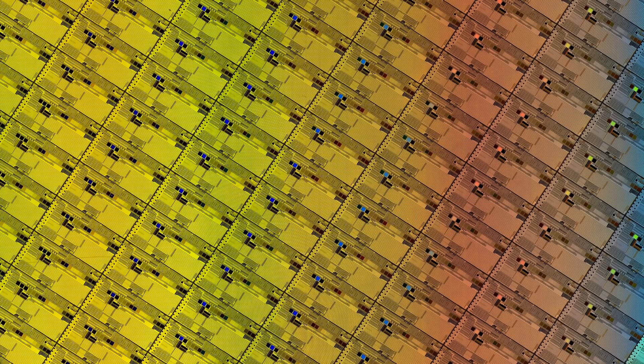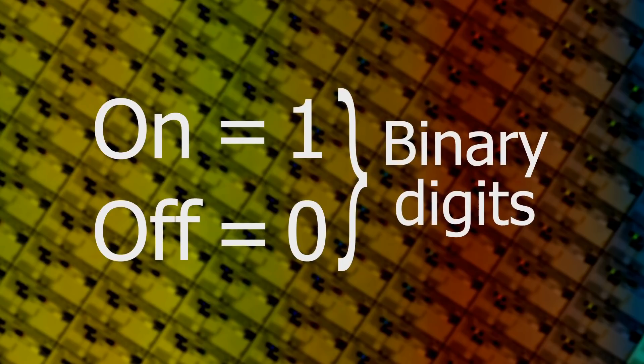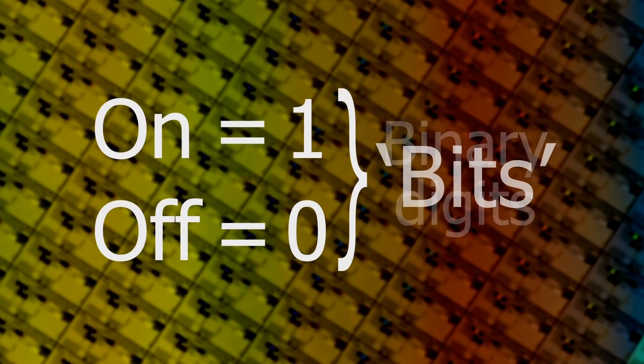Conventional or classical computers are built from billions of transistors that are turned on or off to represent a value of either 1 or 0. This allows classical computers to store and process data using binary digits or bits.